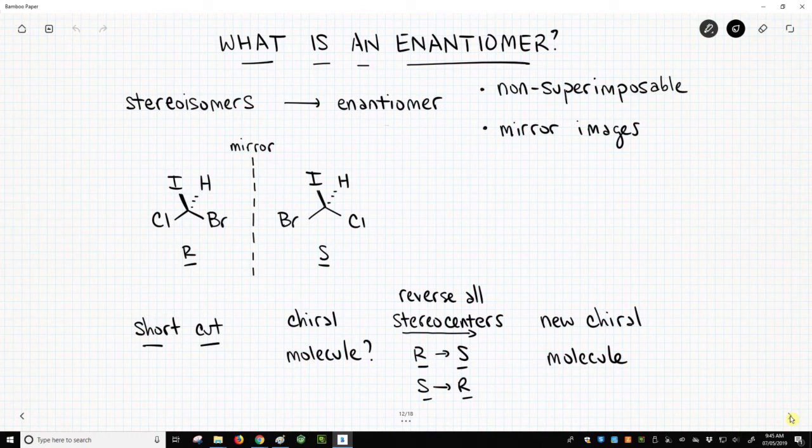Now, when you deal with stereoisomers, you're dealing with molecules that have the same molecular formula. They have the same connectivity between the atoms, but they're geometrically attached differently. And there are two types of stereoisomers. One of those types is called an enantiomer.